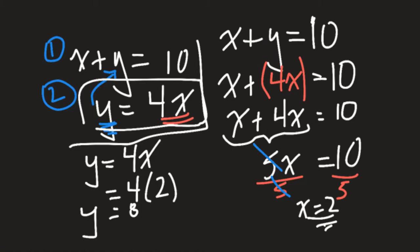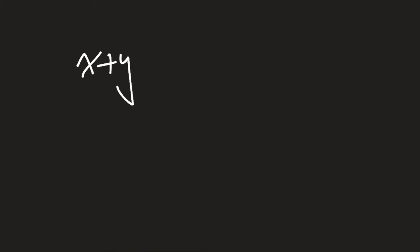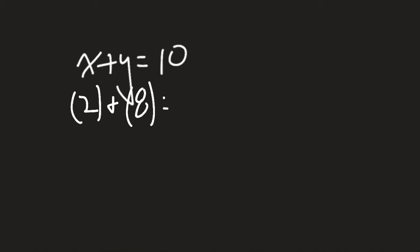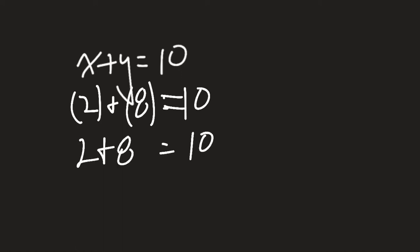What you can do once you're done is a check. I've run out of room on this slide, so I'm going to do my check on another page. My x was equal to 2 and my y was equal to 8. I'm writing brackets to show that I'm substituting in those values for x and y. Breaking them out of brackets: 2 plus 8 equals 10 equals 10. So we know it's correct for equation number 1.